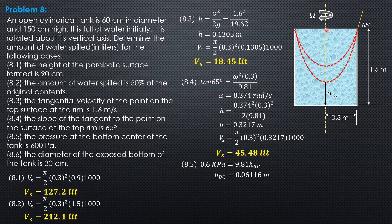So that means the height of the paraboloid, this one is 1.5 minus HBC minus 0.06116. So the height of the paraboloid is 1.439 meter. Then substitute, volume spilled is pi over 2 times 0.3 squared times 1.439 times 1,000. So volume spilled is equal to 203.4 liters.